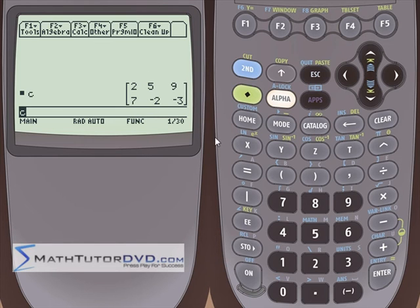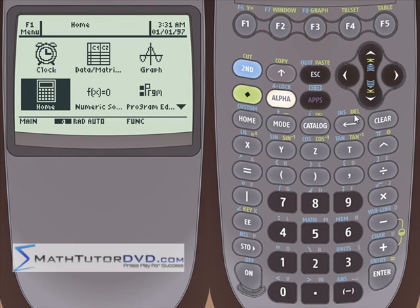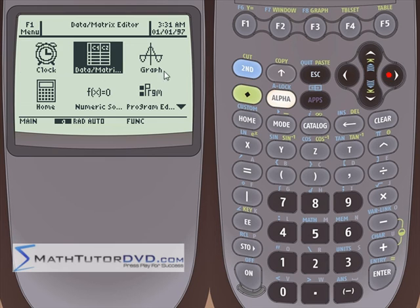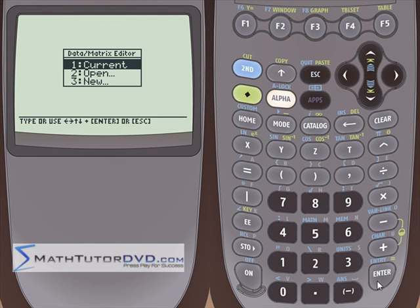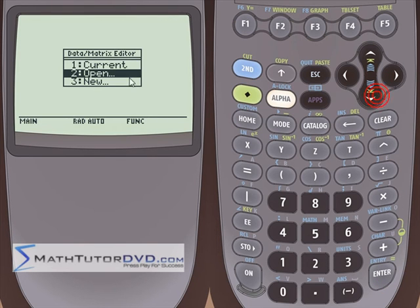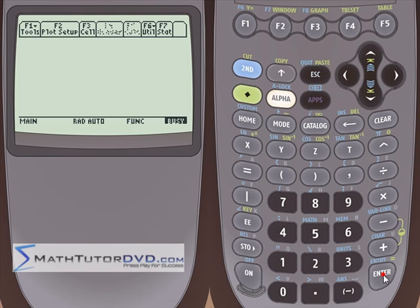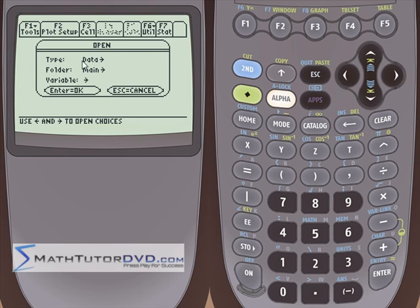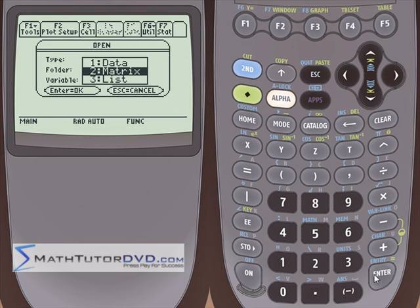Now, what if we had already saved a matrix and we would like to change it or edit it? So let's say we enter this and we say, oh no, this isn't supposed to be a two. It's supposed to be a one. The easiest way to do that is to go back into the apps menu, find where it says data matrix editor, and go ahead and open up a matrix number two. Now again, it's going to default to data. You don't want to deal with that. You're trying to tell it you're dealing with a matrix. So select that.